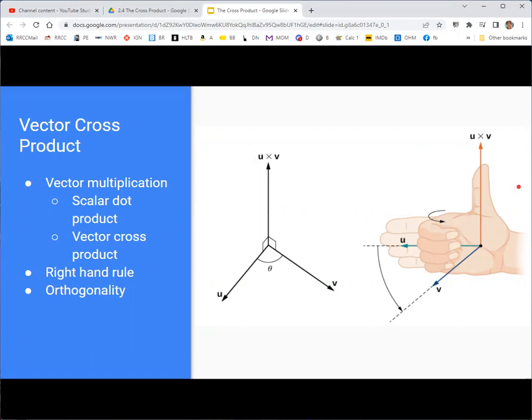Similarly, we use a right-hand rule to define the cross product. The first vector that's listed in the cross product, in this case u, you start your fingers of your right hand pointing in the direction of u, and then curl them to the direction of v, and then your thumb should be pointing in the direction of the cross product vector.